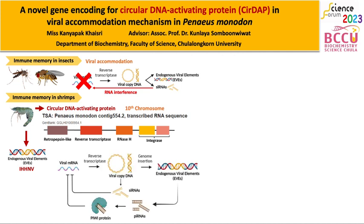From the proposed pathway, we suggested that reverse transcriptase and INSH may be involved in viral mRNA conversion to circular viral copy DNA. Circular viral copy DNA can then be inserted into the genome by integrase, becoming EVE. EVE can be transcribed to PIWI-interacting RNA and then bind to the PIWI protein. Viral copy DNA can also give rise to small interfering RNA, which can further process in RNA interference, leading to viral RNA degradation like in insects.